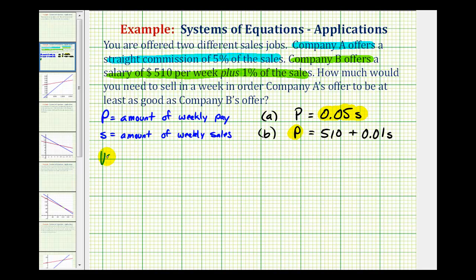So using substitution, we would have the equation 0.05S must equal 510 plus 0.01S.